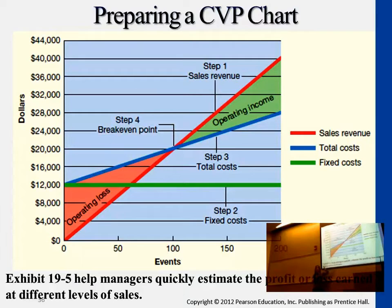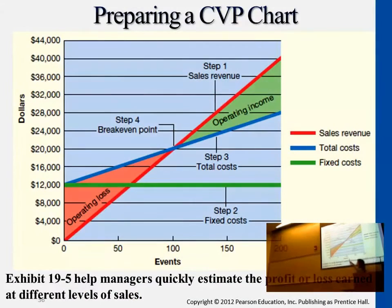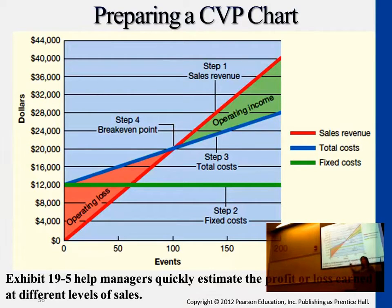This chart gives more comprehensive information on different levels of events — what sales revenue is generated and what cost is incurred. The first step to draw this chart is to start from revenue. Step one: choose a sales volume and plot the total sales at that volume. If we choose 100 events, sales revenue is $20,000. Put a dot there and link it to zero, because when there are no events sold, we're not getting any revenue. The fixed cost line — the green line — is the one that doesn't link to zero.